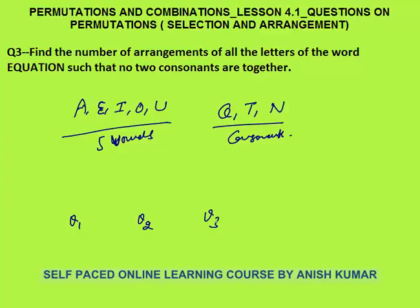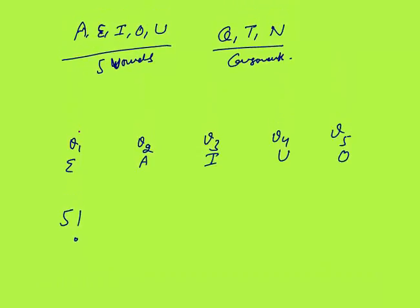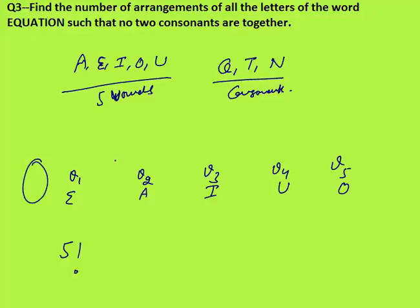5 vowels will be arranged in a row. A, E, I, O, U — these 5 vowels can be arranged in 5 places in 5 factorial ways. Let's say E came here, A came here, I came here, U came here, O came here — one of the cases. Now in between the spaces of these vowels, the circles, the consonants can come. If 3 consonants come in any of these 6 circles, no 2 consonants will be together and our criteria will be fulfilled.